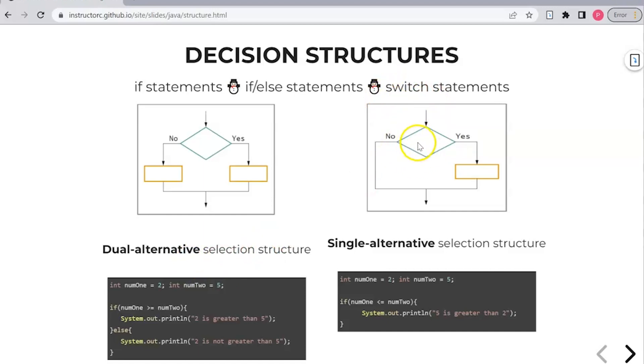The next structure is a single alternative. You have some condition. If this condition is met, yes, it's true, then do this branch. But there's no alternative. So in this case, a single alternative. And this is an example of the code. So if number one, num one is less than or equal to num two, do this here. But there's no other alternative.